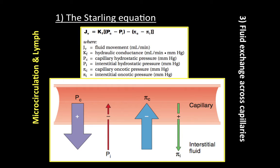Starting with the Starling equation — this gets asked in all exam questions related to this topic. Let's walk through each variable. We start with JV, which is the fluid flow. When JV is positive, there is a net fluid movement out of the capillary — this means filtration. When JV is negative, this means absorption. So positive is filtration, negative is absorption.